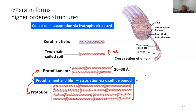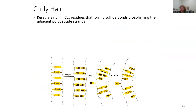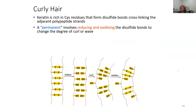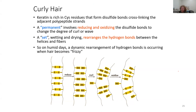Hydrophobic interactions set the stage for disulfide bond formation. As a reminder, this would be a cysteine-cysteine residue interaction. This is ultimately what gives hair its curls — keratin is rich in cysteine residues that form disulfide bonds, cross-linking the adjacent polypeptide strands. A permanent wave involves reducing and then oxidizing a disulfide bond to change the degree of curl or wave, also known as a perm. Wetting and drying rearranges the hydrogen bonds between the helices and the fibrils.